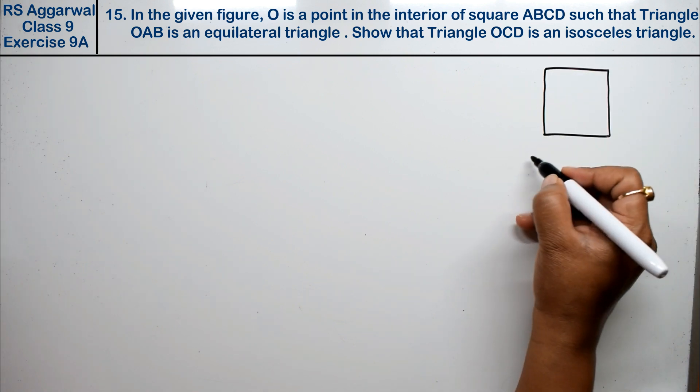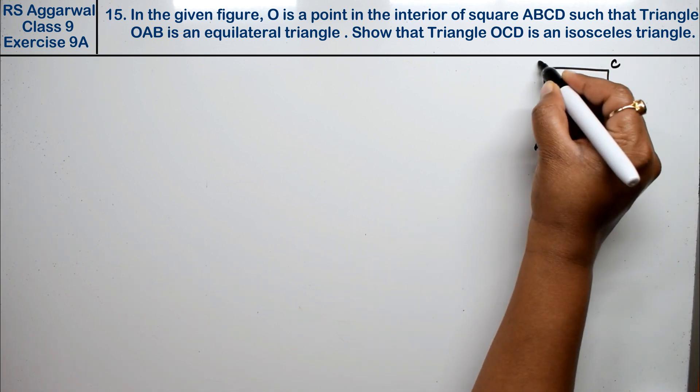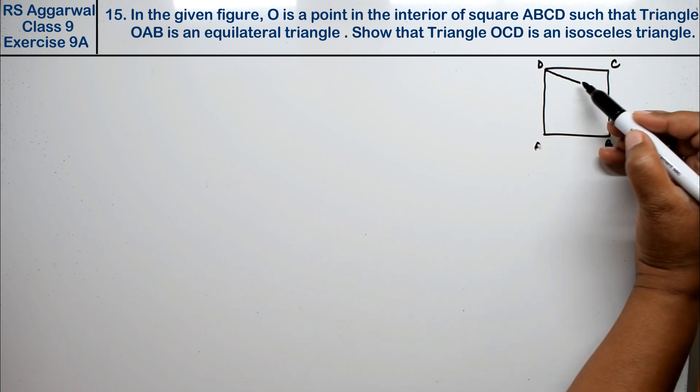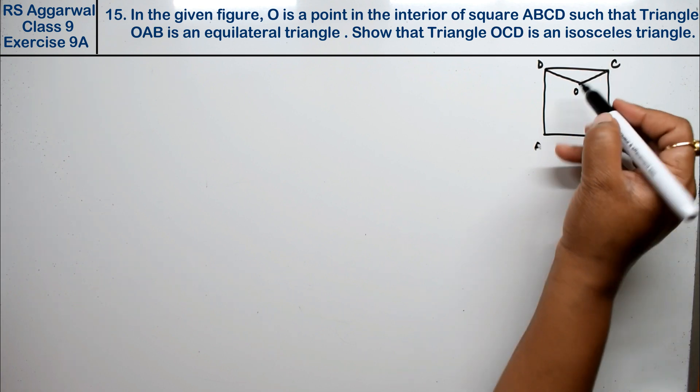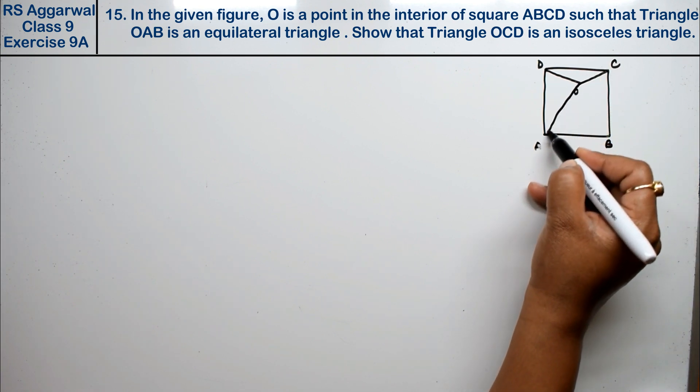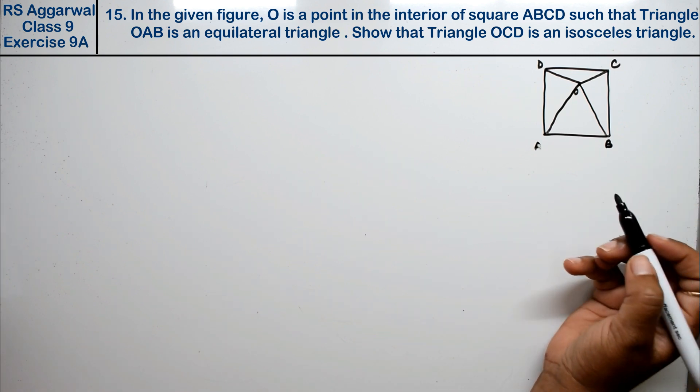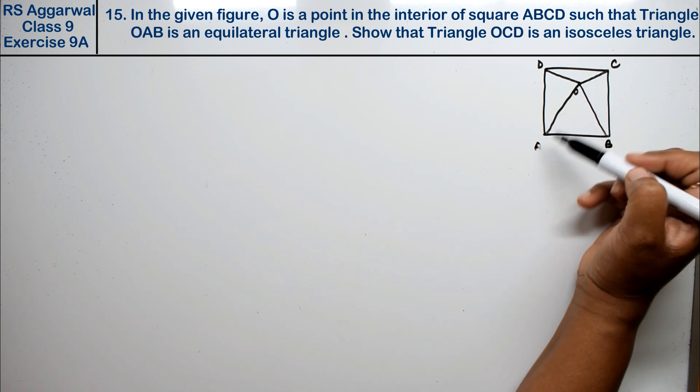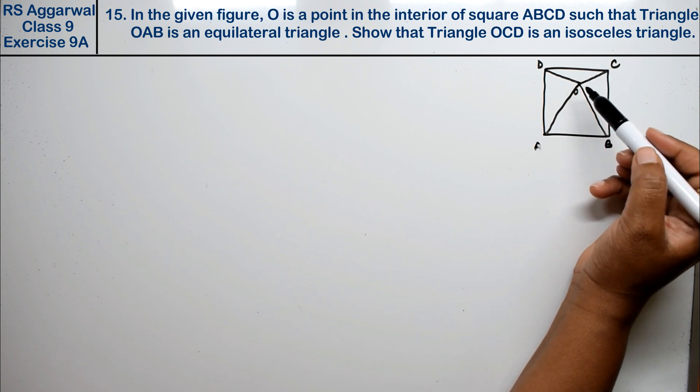We have points A, B, C, and D forming a square, with point O inside joined to various vertices. Now let's read the question: In the given figure, O is a point in the interior of square ABCD.